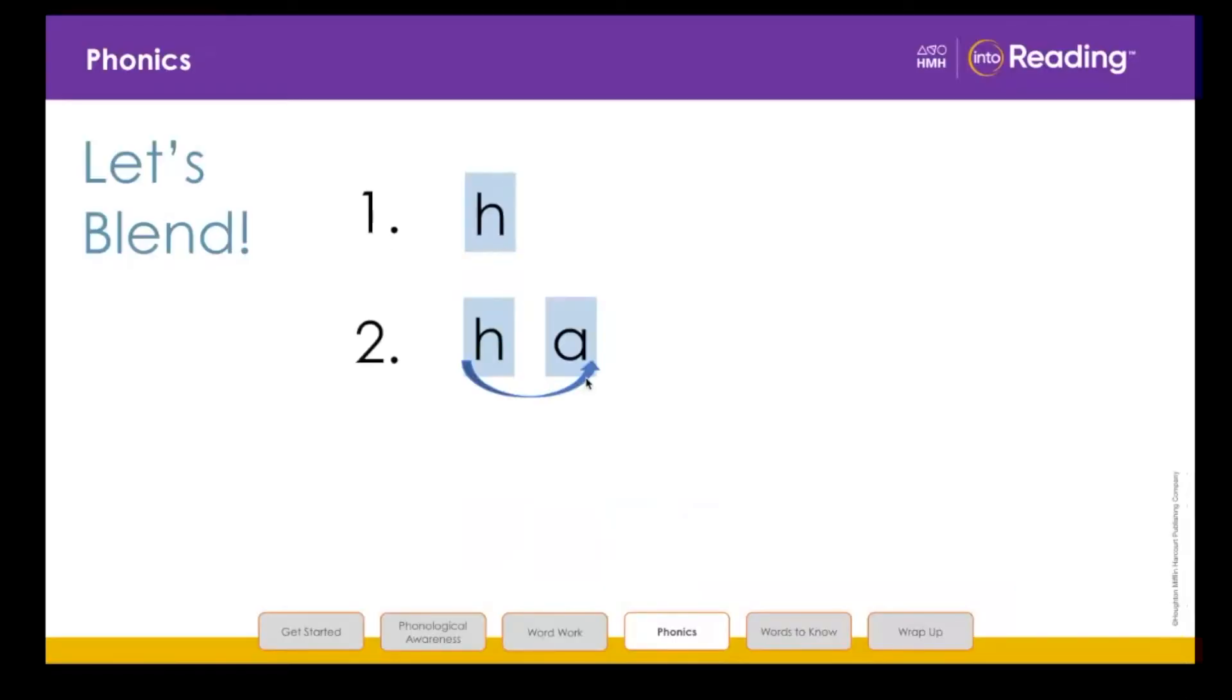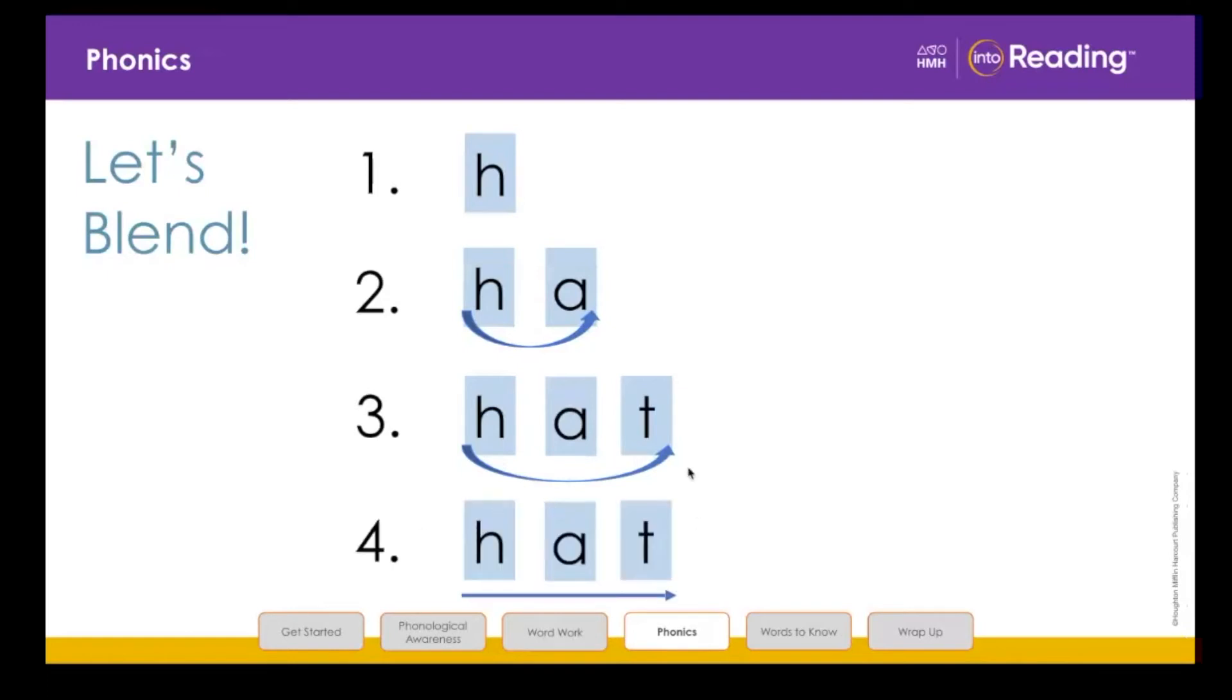Let's try the next one. And I want you to make the sounds and blend it with me this time. H-a. Blend. Ha. H-a-t. Blend. Hat. What word is it? Hat. Grab your lasso and say it with me. Yee-haw! I am wearing a cowboy hat.